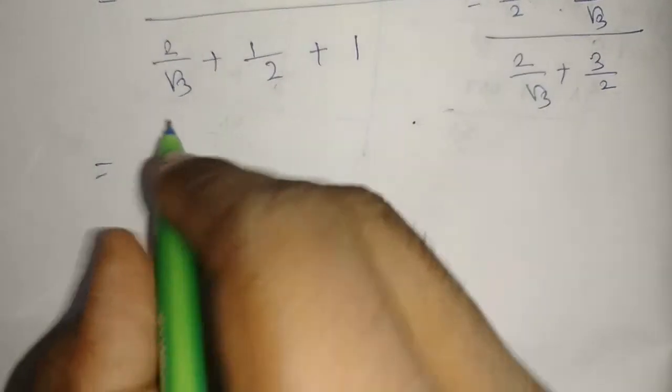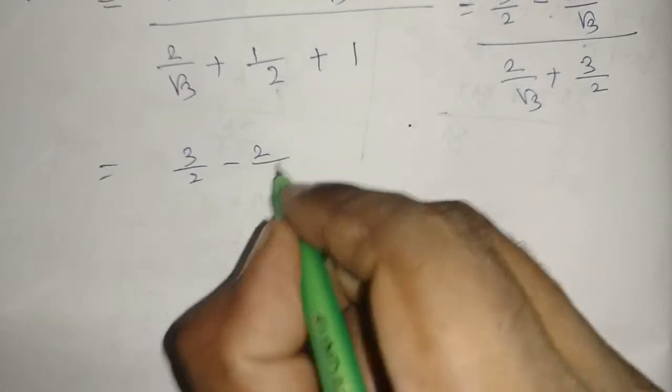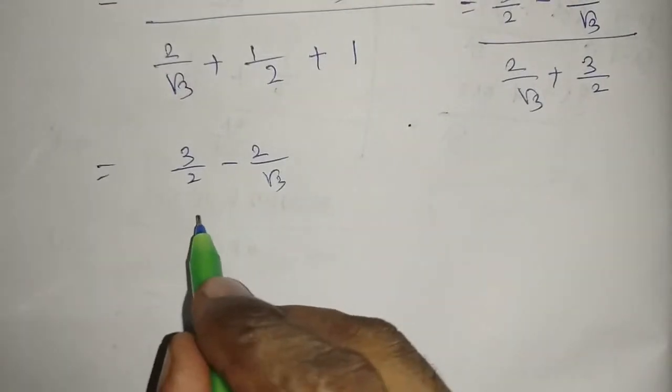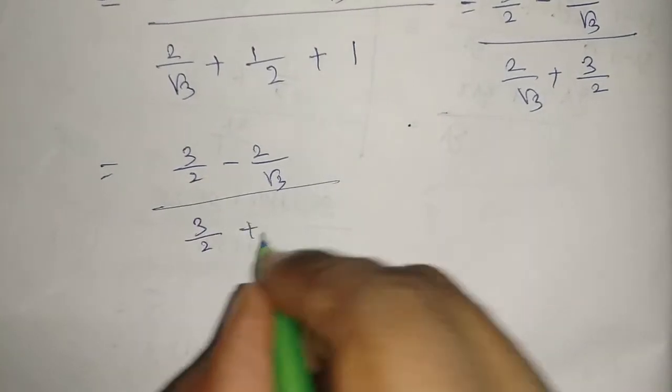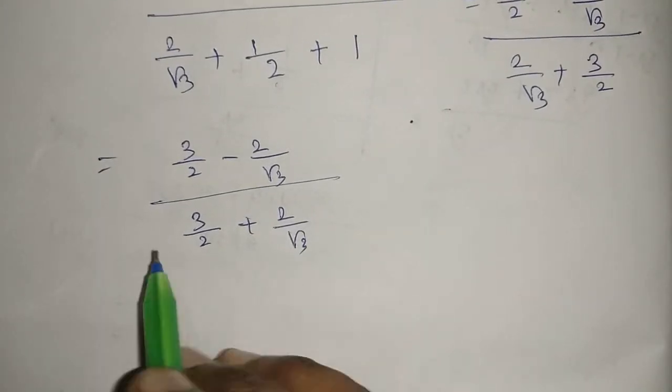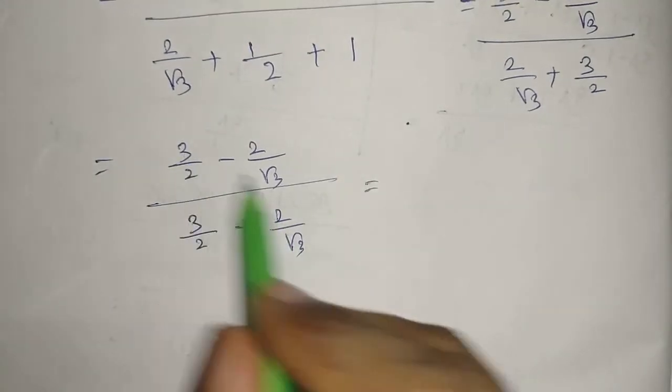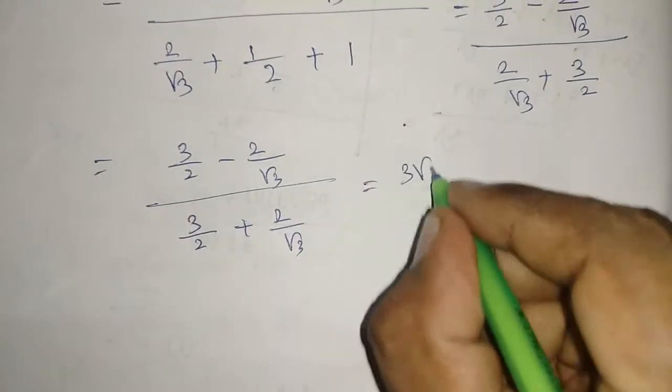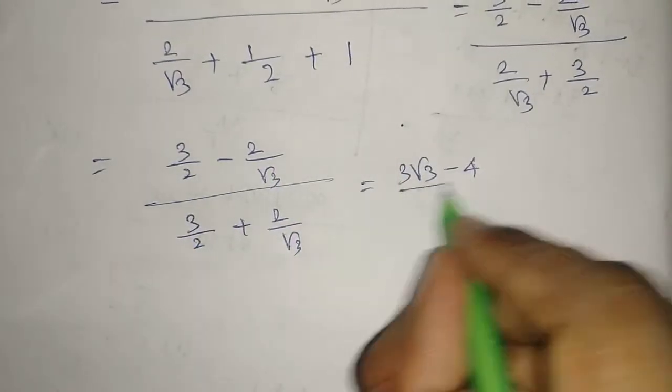Now I am going to arrange that. So we have 3/2 - 2/√3 divided by 3/2 + 2/√3. Before taking LCM, please take cross multiplication.